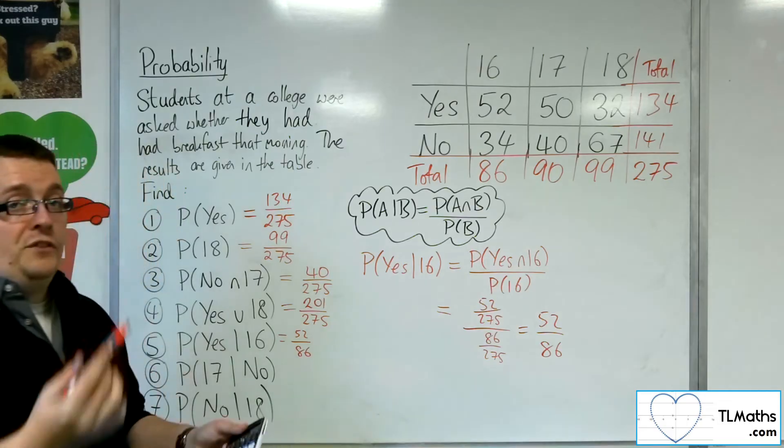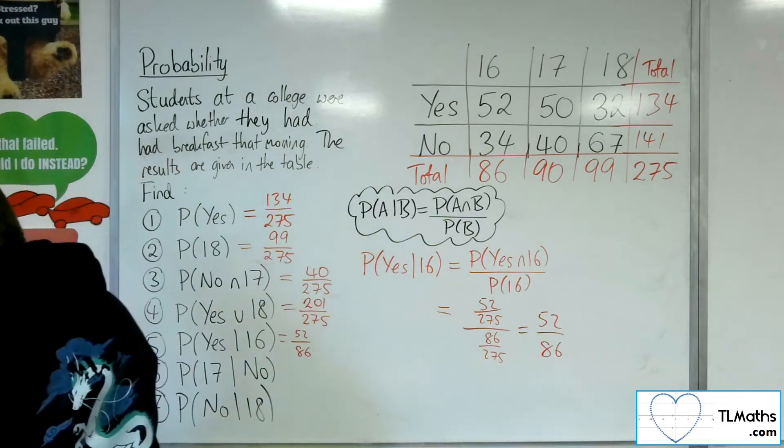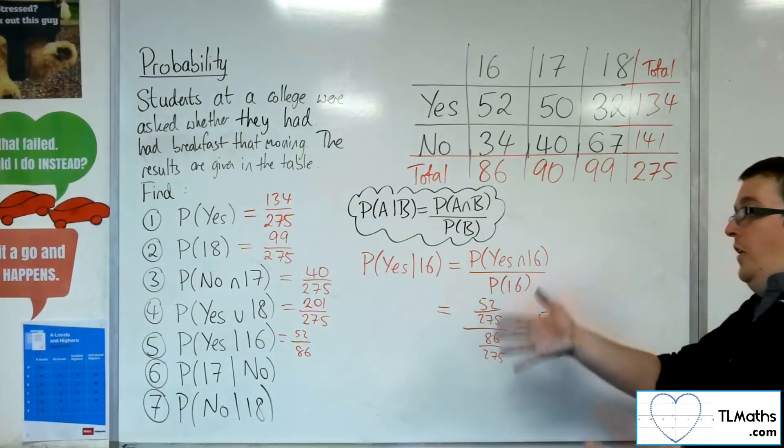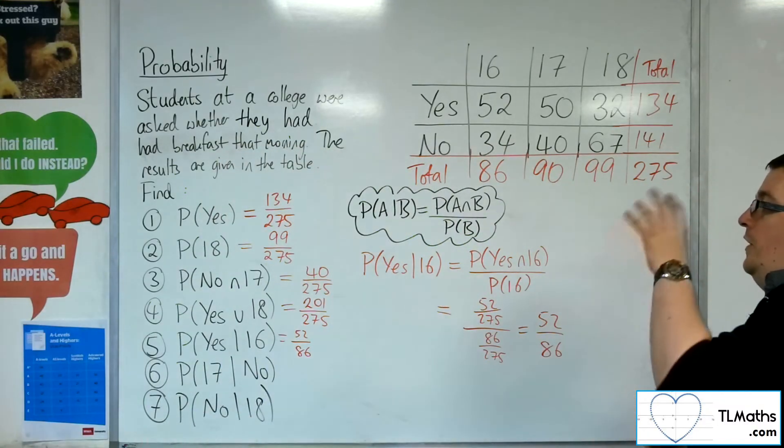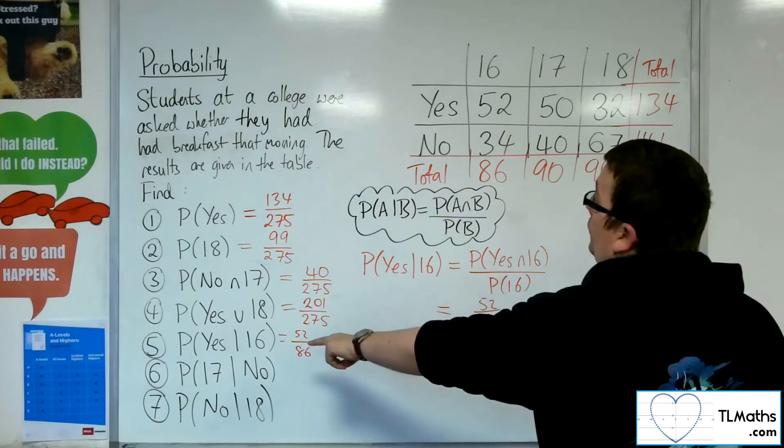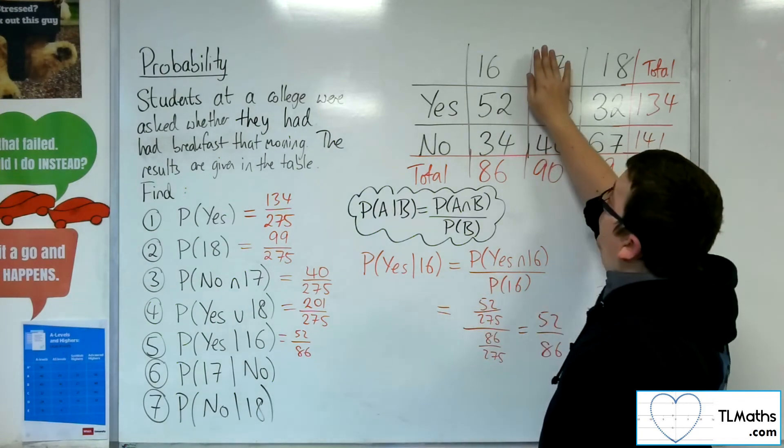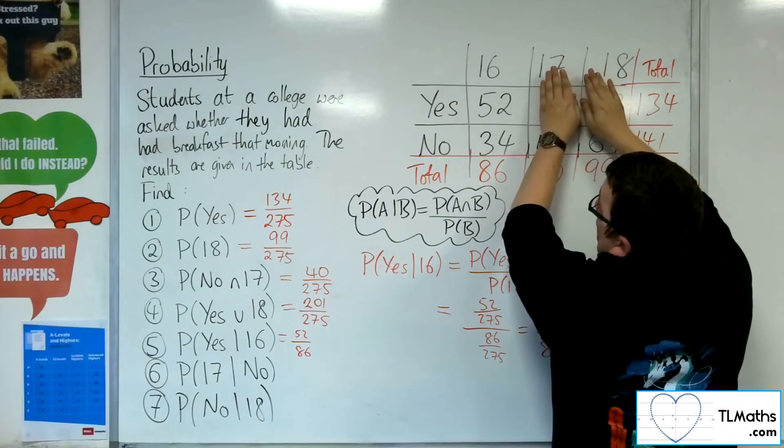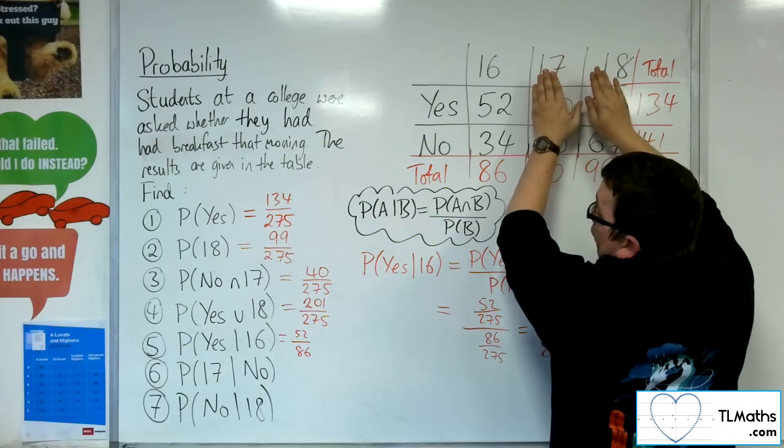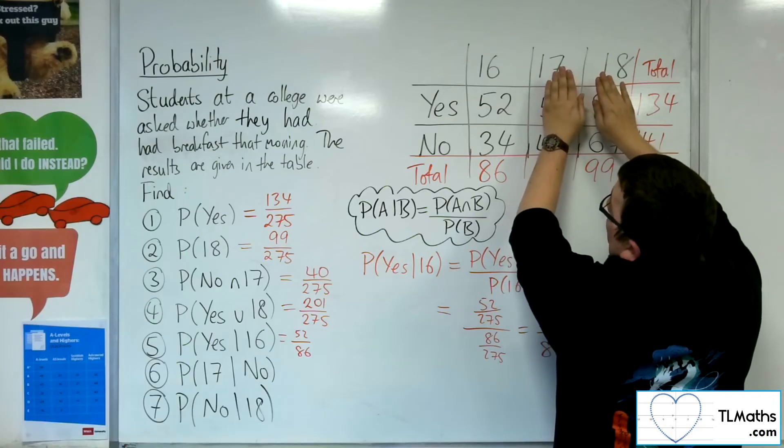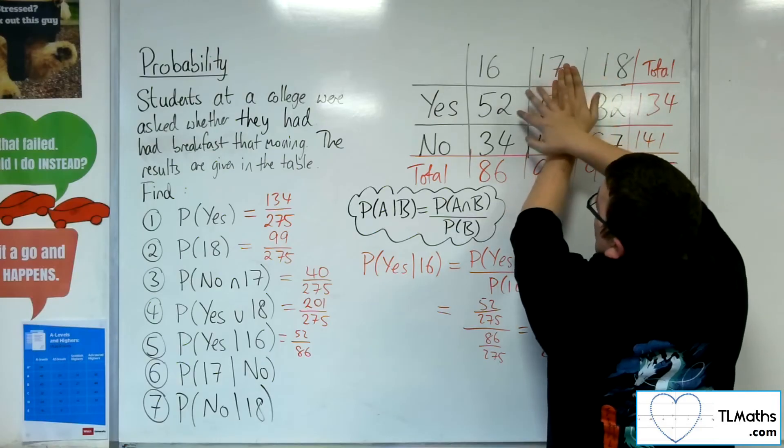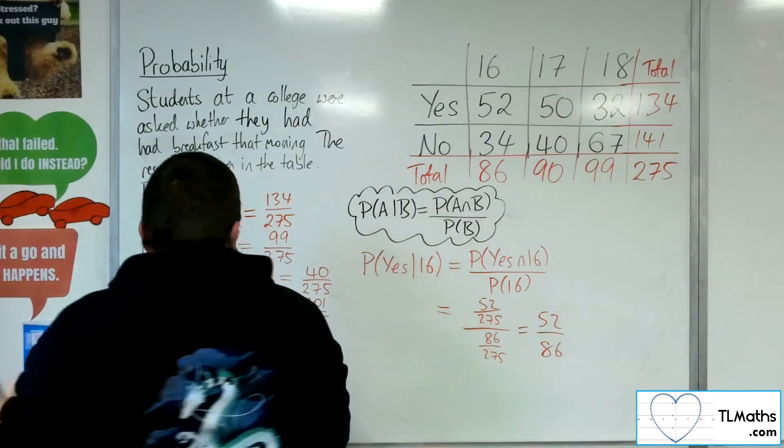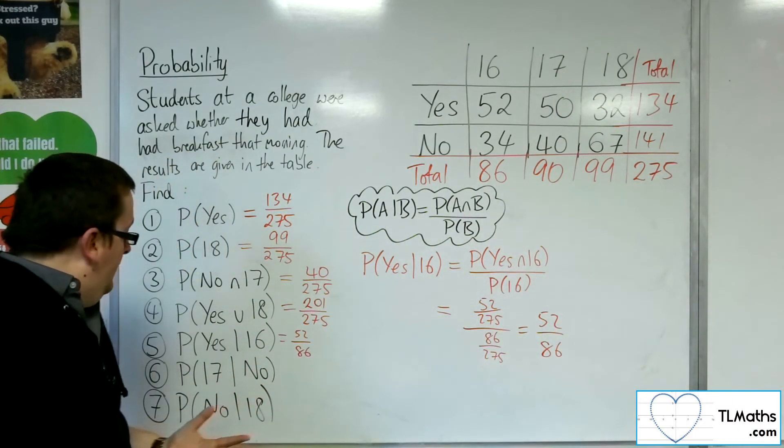But there's an easier way to do it. Okay, you don't really need to use the formula when you're using a two-way table. Because if you're told that we're given 16, you're just looking at that column, the 16 column. So what's the probability of someone saying yes out of the 16 column? Well, it's 52 out of 86. Okay, so it's as easy as that. So we don't really need the formula for these.